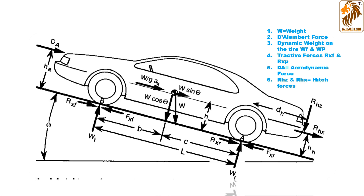Next we have Rhz and Rhx, known as hitch forces. Suppose something happens and I want to tow my vehicle — I have to apply some force, known as the hitch force. This force component is divided into two components: one in the z-direction (Rhz) and one in the x-direction (Rhx).